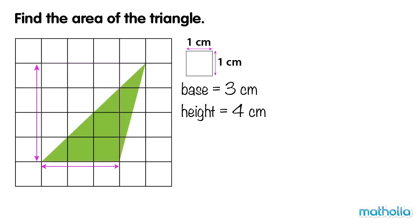The base and height form a rectangle. We can find the area of the rectangle by multiplying the base and the height. 3 cm times 4 cm equals 12 cm squared.